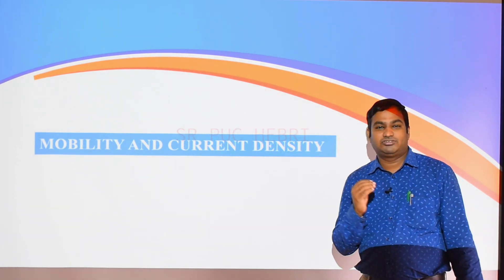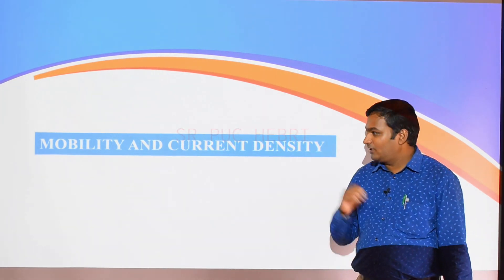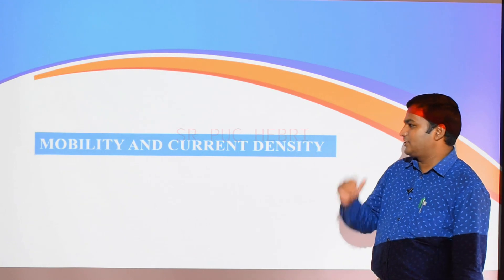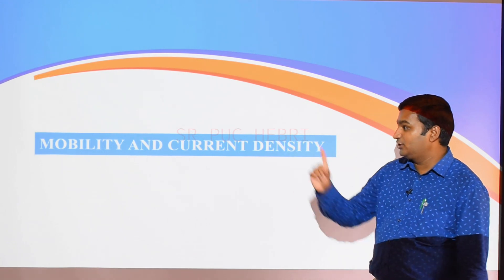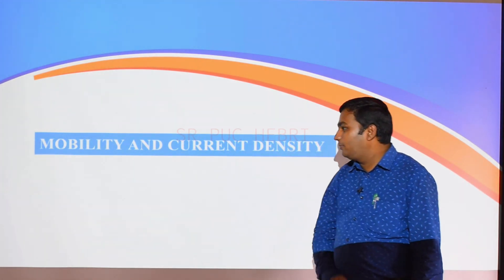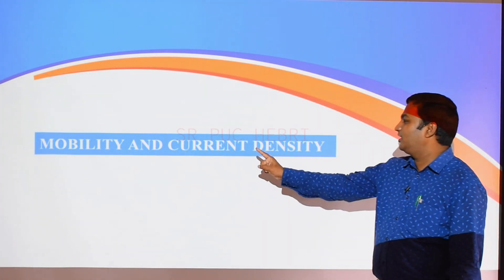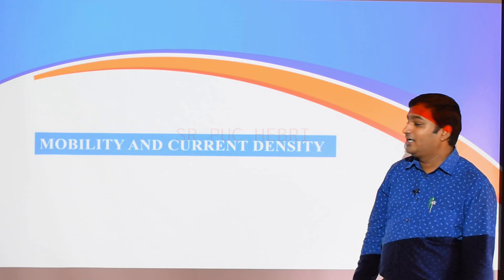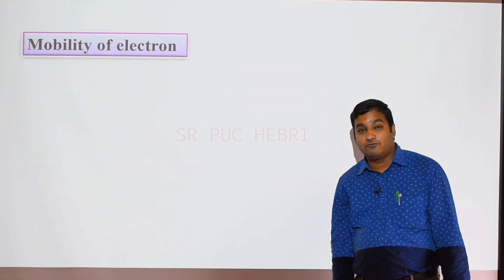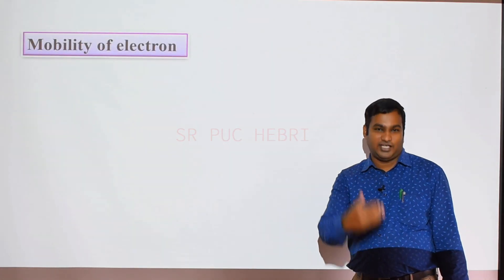Today, in chapter 3 on electric current or current electricity, we are going to learn two important things: one is mobility, and another one is current density. First, we will learn what is the meaning of mobility of an electron.